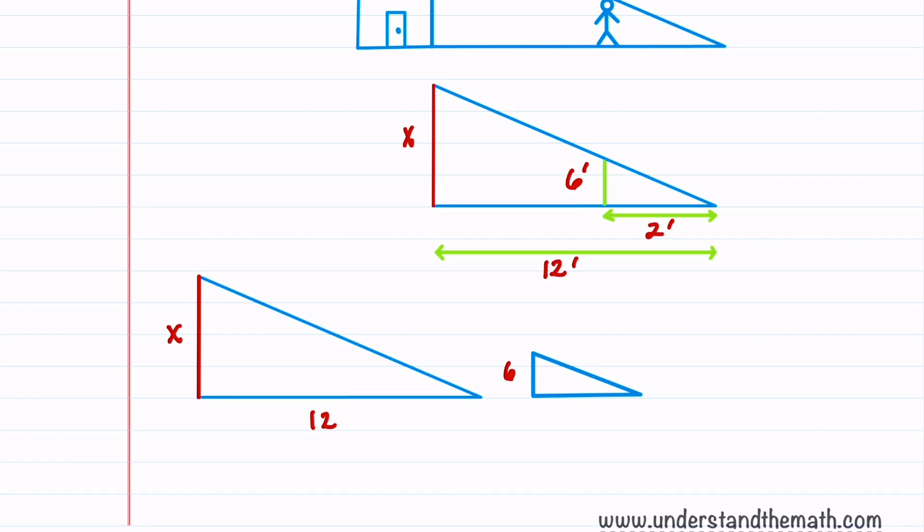And let's notice that both triangles share a common right angle. Not the same right angle, but they both have a right angle. And then we also notice that they share a common angle, which we'll call alpha.